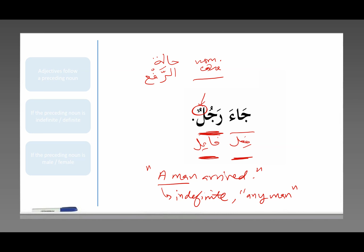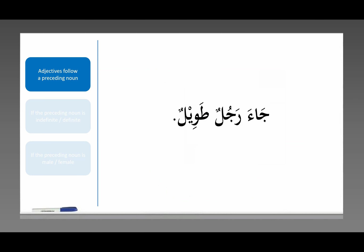But let's look at this next sentence: جاء رجل طويل. Here, this is still the verb and this is still the fa'l, the one who is doing the verb. But here there's another word. That is clearly a noun because of the tanween. It's a noun, but it's also in the nominative case, حالة الرافع.